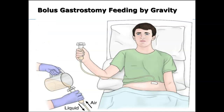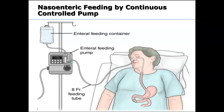Bolus feeding using gravity uses a syringe without the plunger — you pour the nutrition into the open barrel and it flows down into the tube into the patient by gravity. Continuous feeding delivers enteral nutrition over a 24-hour period. Intermittent bolus feeding is defined as delivering enteral nutrition multiple times, generally in increments of about 30 minutes, every two to three hours, done by gravity or an electric pump.